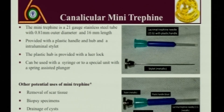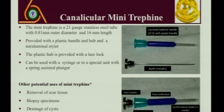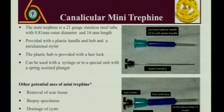This figure shows the device: it is a 21-gauge stainless steel tube with the diameters shown. There is a plastic hub and a metal stylet inside. The purpose of the stylet is that the trifine does not start cutting before you want it to — once the trifine is in place, you remove the stylet to expose the sharp cutting edge. Other potential uses of the mini trifine include removing scar tissue, taking biopsy specimens, and drainage of cysts.